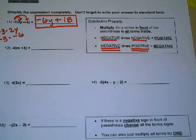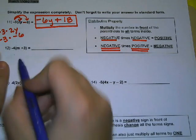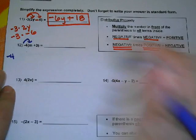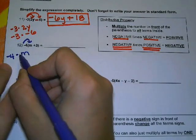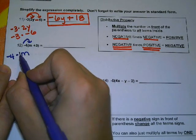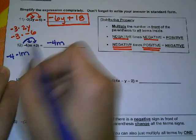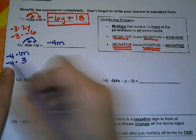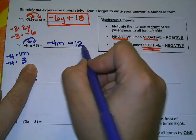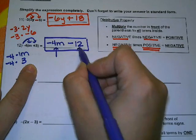So when would we use the distributive property? Whenever you can't do the parentheses first and you have a number in front of the parentheses. So here we have a negative 4 times m. In the previous video, we talked about that if a variable does not have a coefficient, a number in front, it's a 1. So we would do negative 4 times 1 is negative 4m, and then we would have negative 4 times 3. A negative times a positive is a negative, and 4 times 3 is 12. And that would be our final answer. Notice the variable goes first, and the constant goes at the end.